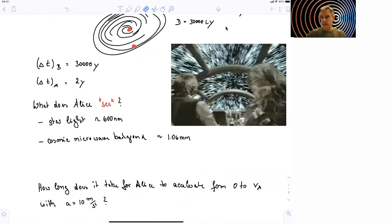So I invite you to work this out, but also think about the next question. How long does it take for Alice to accelerate from 0 to her velocity with an acceleration of 10 meters per second squared, which is 1g, which is very doable for her? I invite you to stop the video here and work out those numbers to get a feel and speculate a little bit about how this journey is actually going to look like.